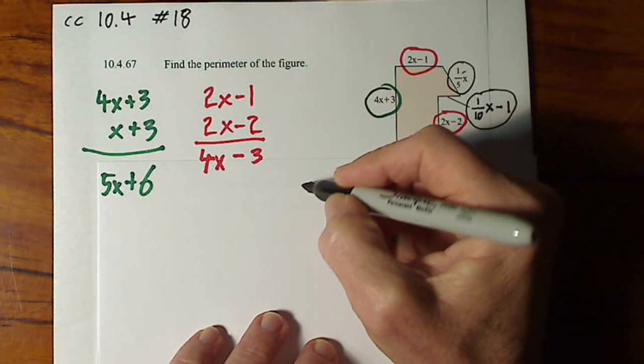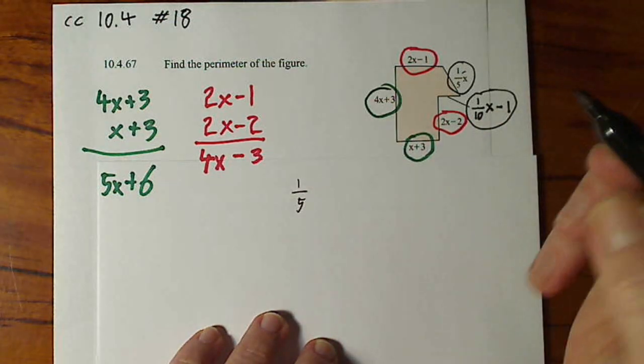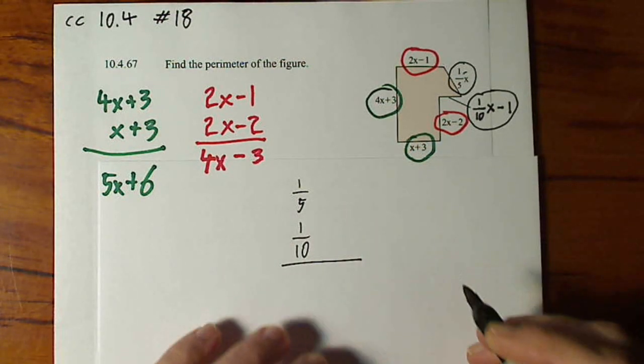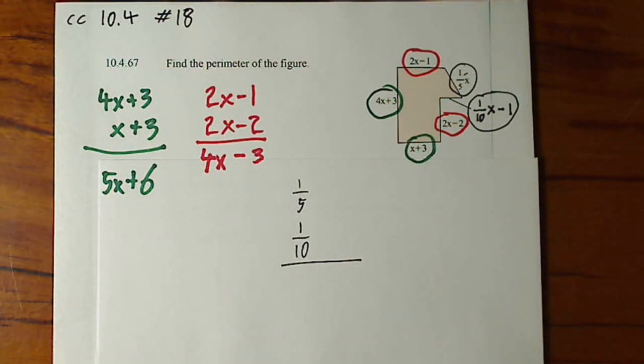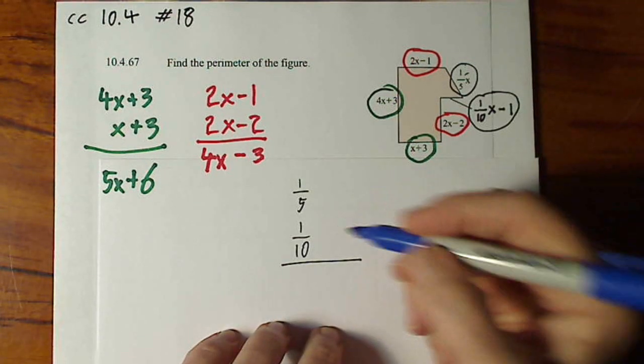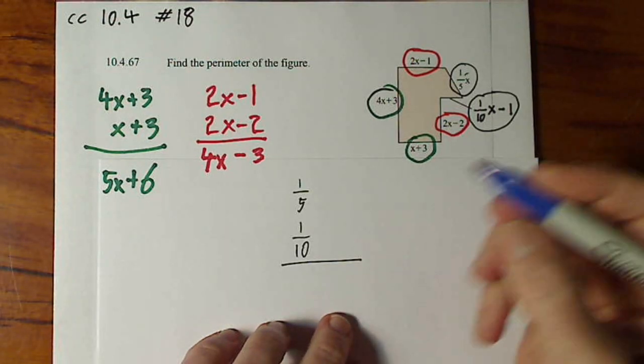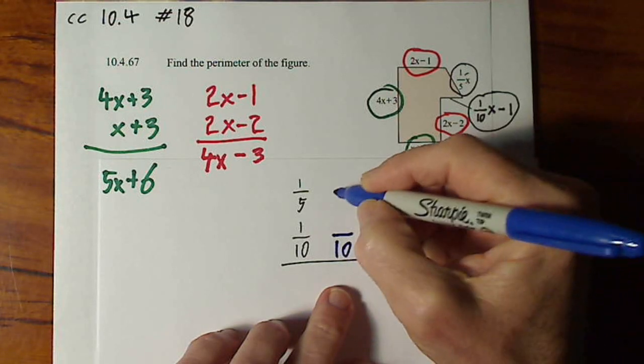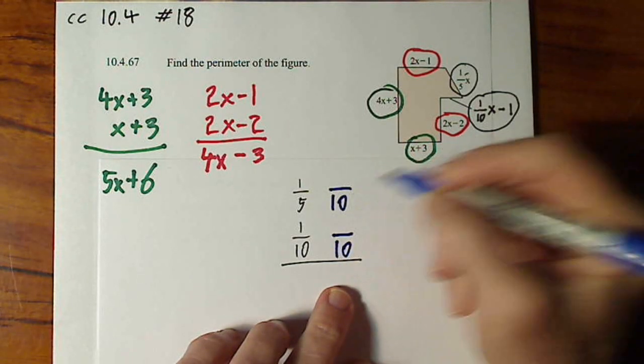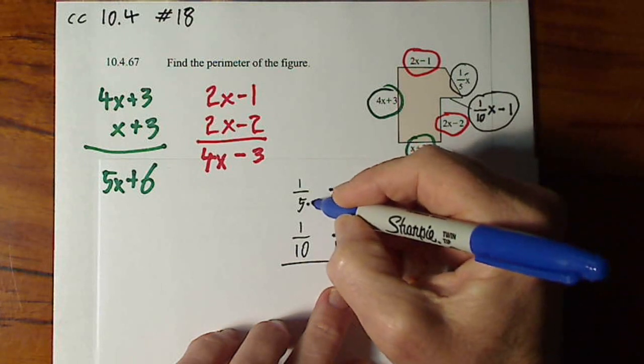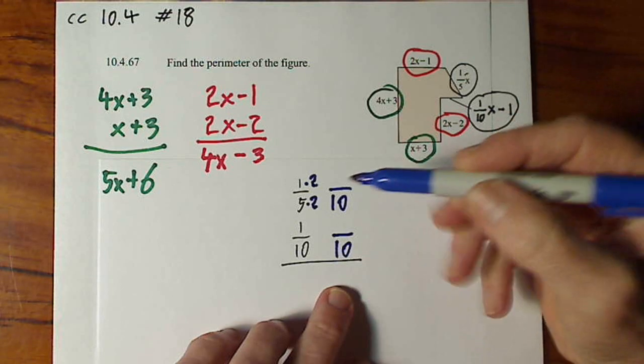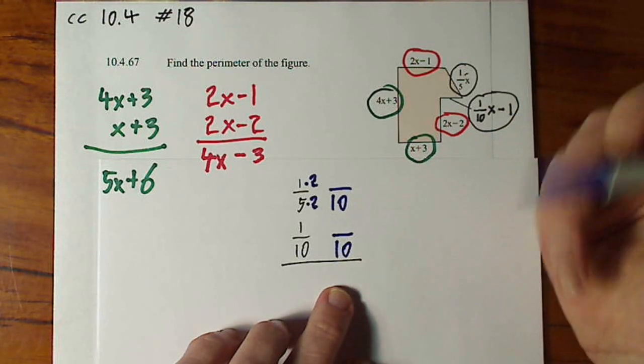If I want to combine 1 fifth with 1 tenth, I need common denominators. So a good candidate for common denominator would be our least common denominator of 10. So this will have a denominator of 10. But in order to get that to a 10, we're going to have to multiply it by 2. And obviously you always have to do the exact same thing to the numerator and denominator of any fraction.